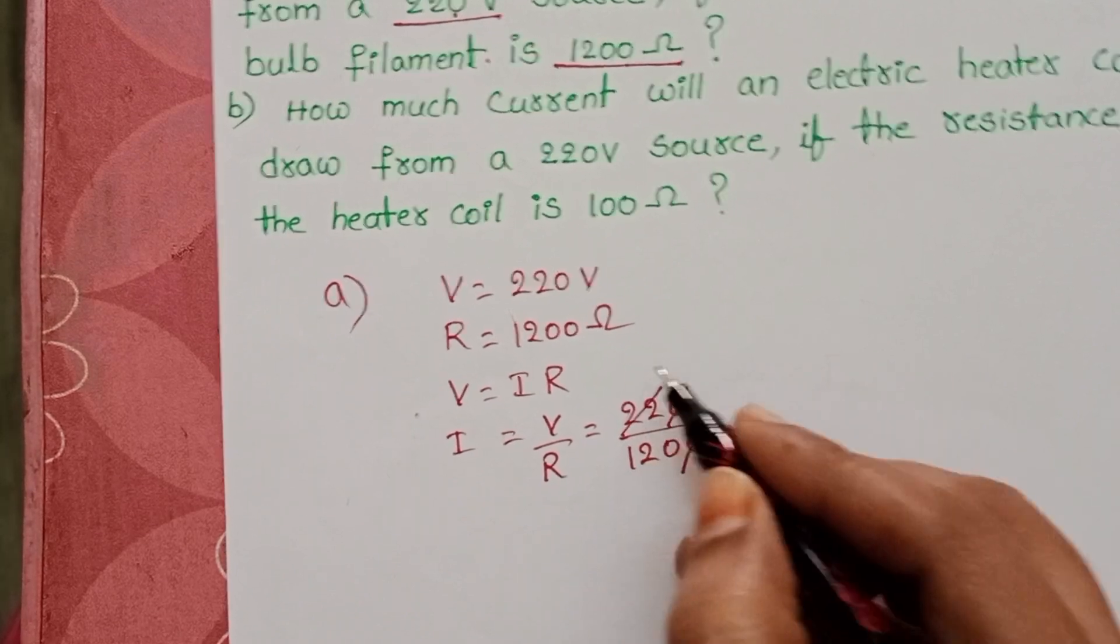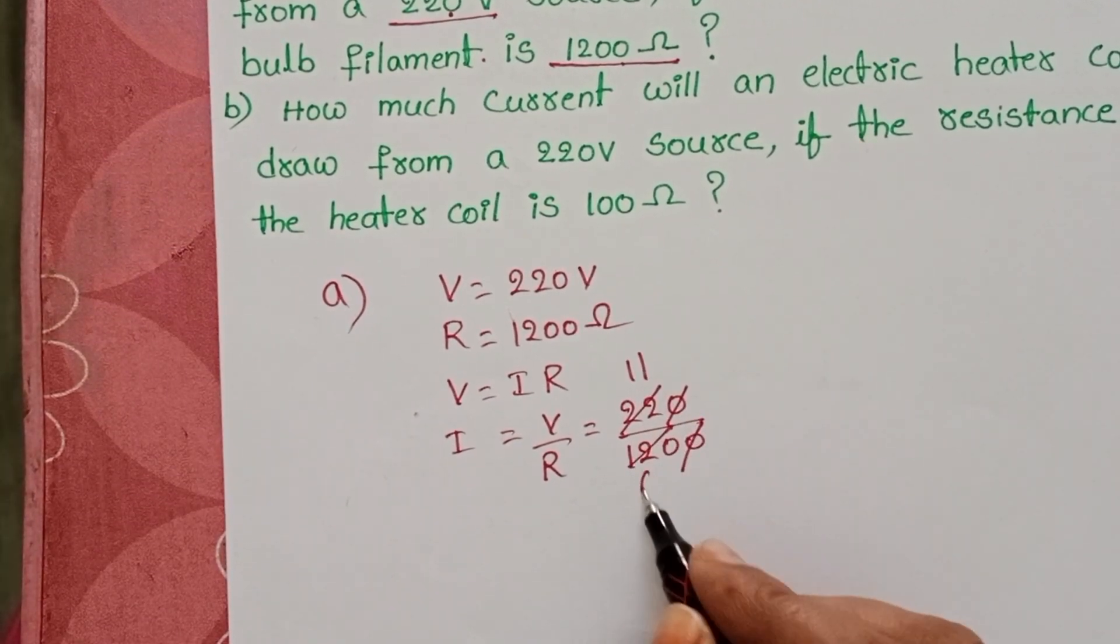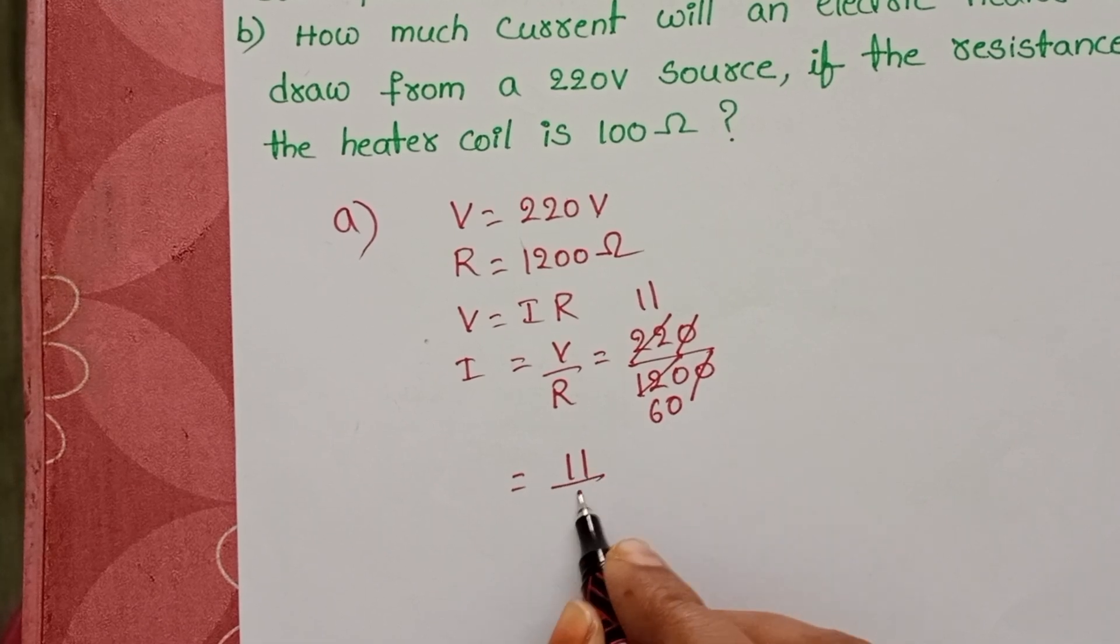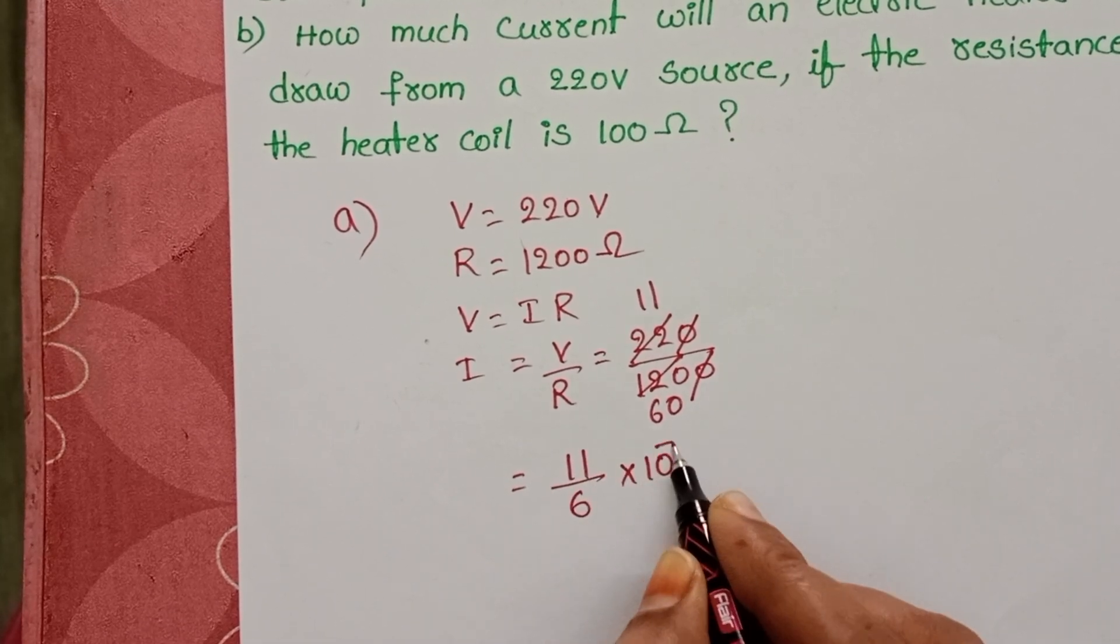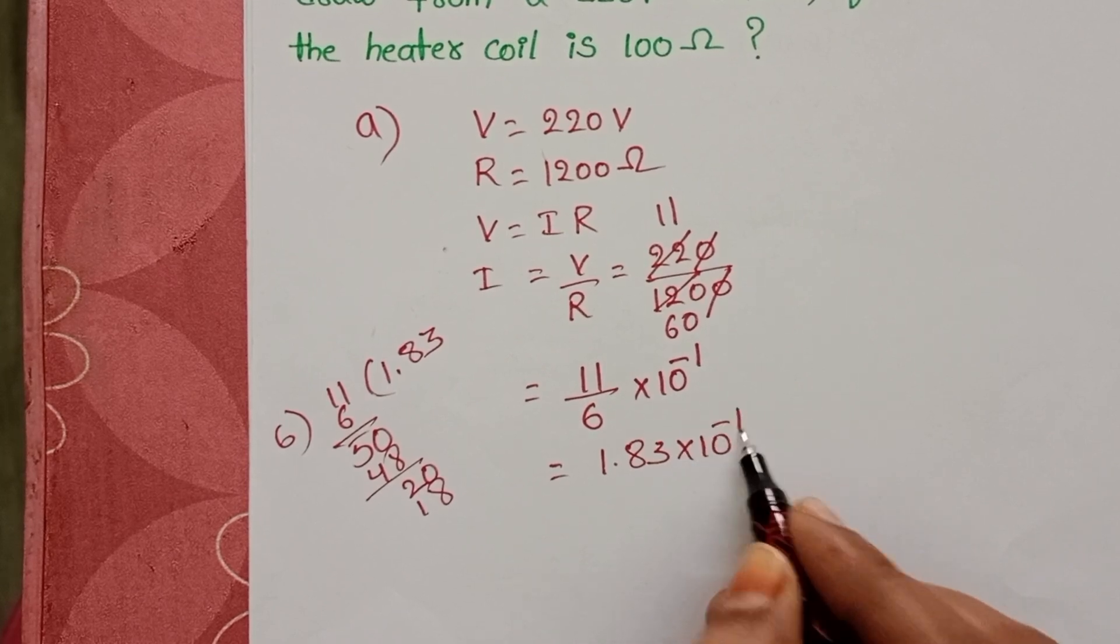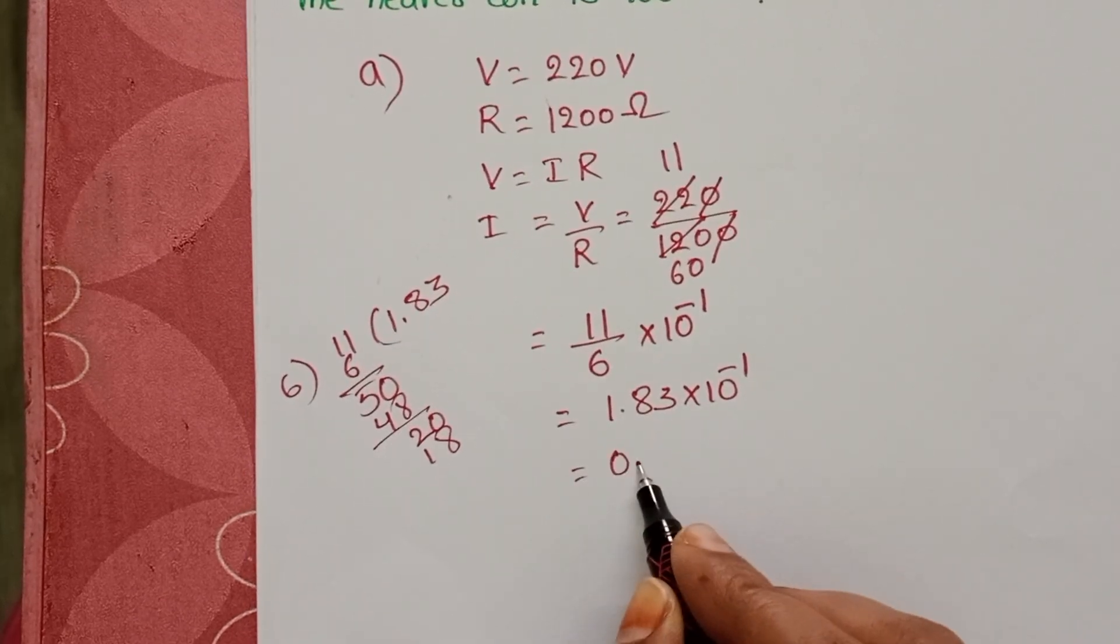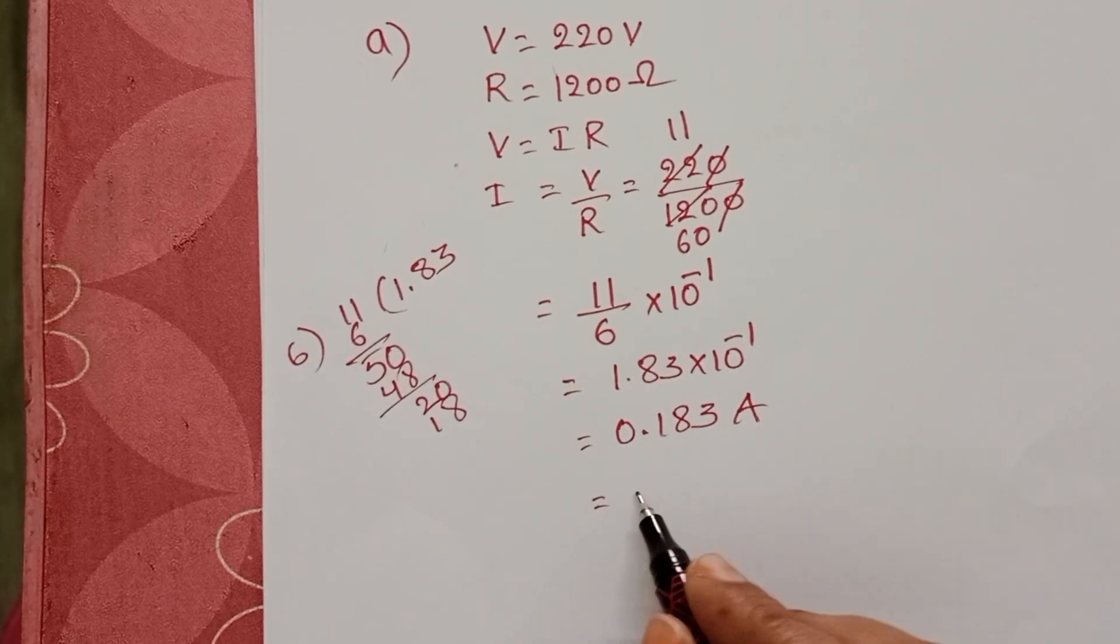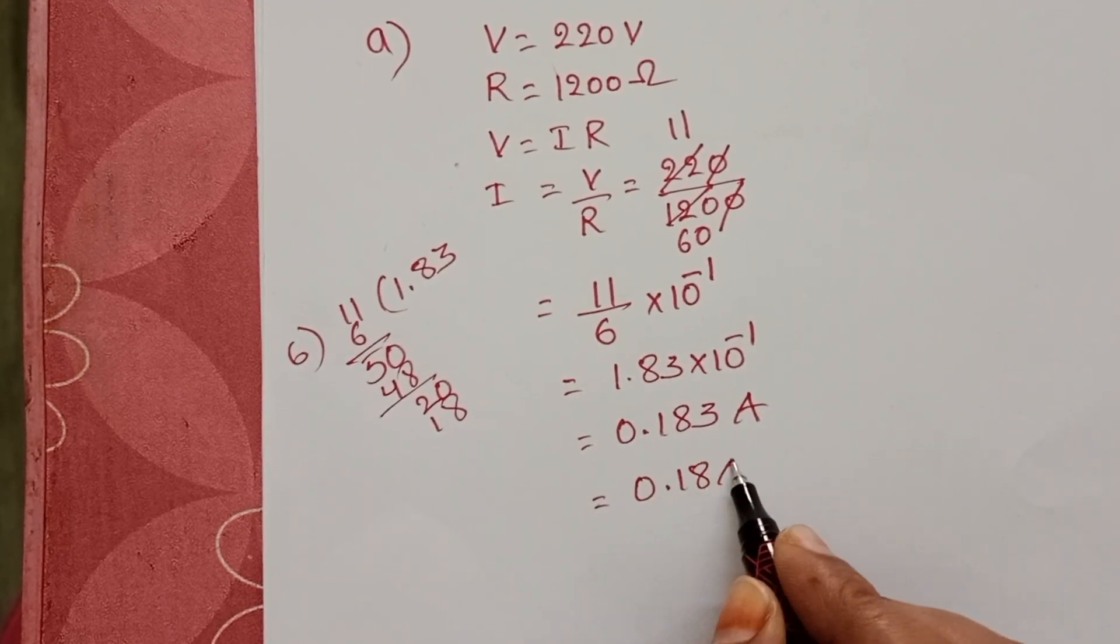Here zero gets cancelled. 2 11's, 2 60's. 11 by 6 into 10 power minus 1. 1.83 into 10 power minus 1. That equals 0.183 amperes, approximately 0.18 amperes.